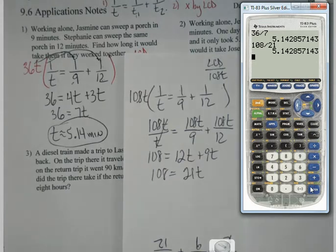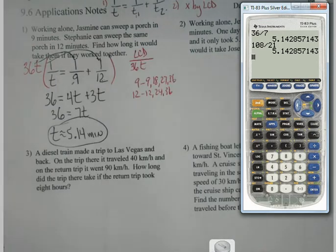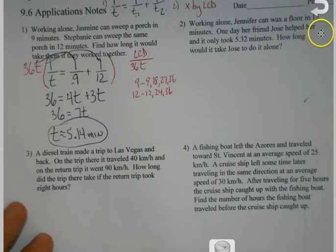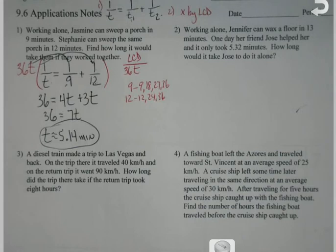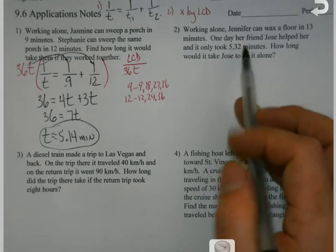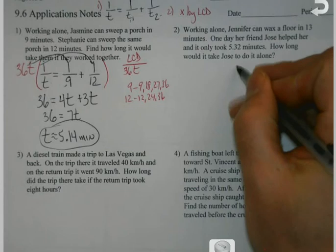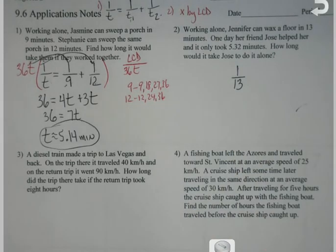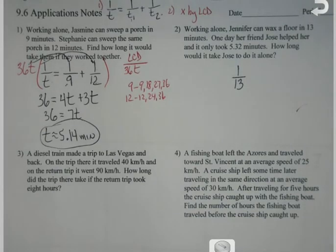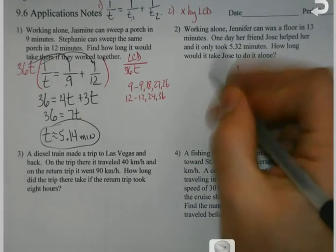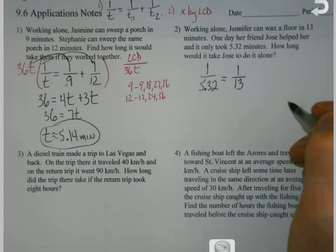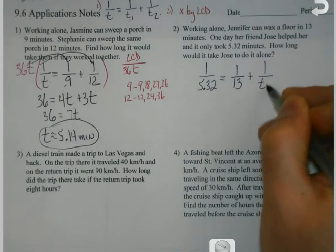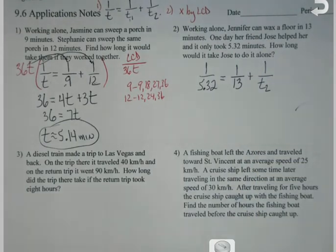So if you're more comfortable just being able to look every time and say, well, I'm just going to multiply those three things together and use that as my LCD, that's fine. You'll get to the same answer, you're just dealing with bigger numbers. So no panic. Don't stress yourself out with the LCD part and make the part that should be easy not so much because you're overthinking it. Now, the second one looks similar, but there's a little twist. Working alone, Jennifer can wax the floor in 13 minutes. You're like, okay, we're 13. One day, her friend Jose helped her, and it only took 5.32 minutes.